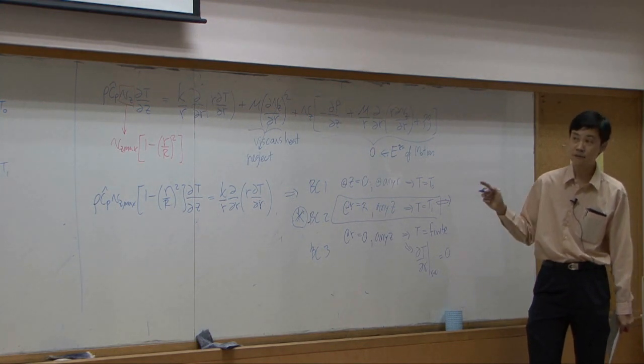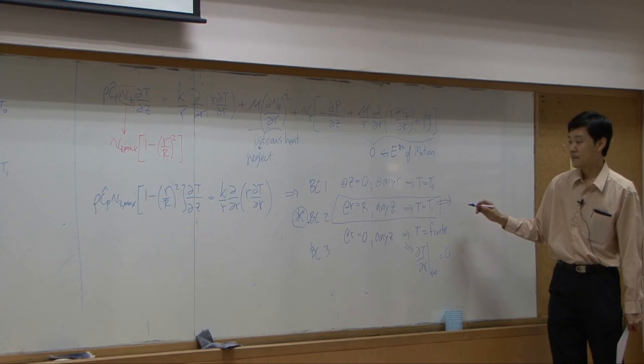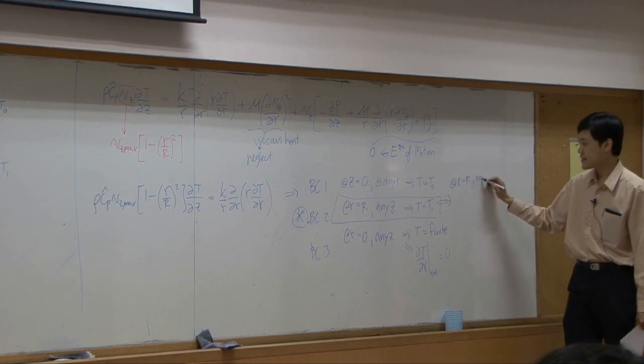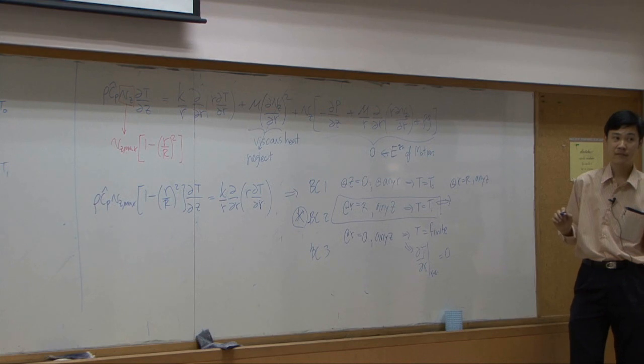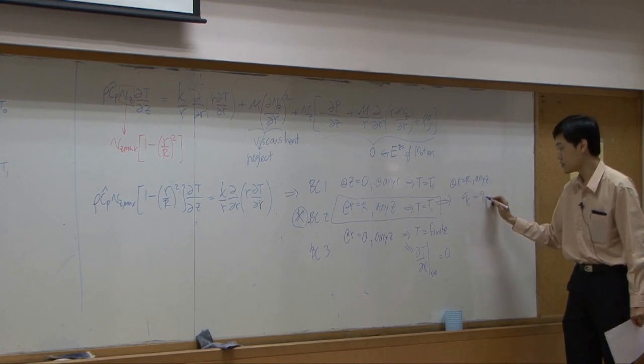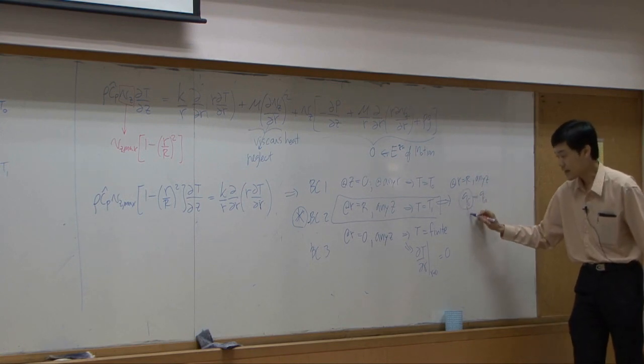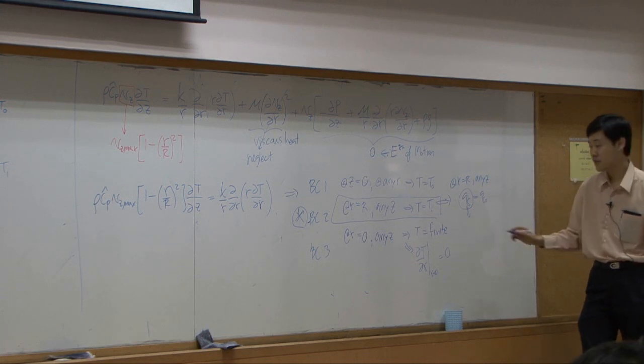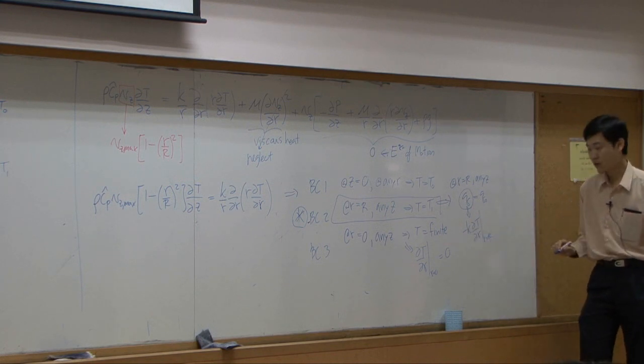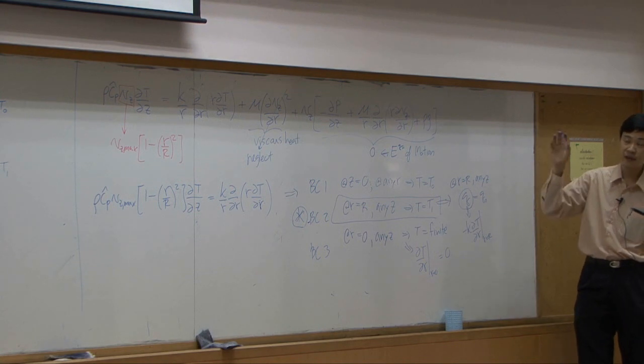Now for constant heat flux, at R equal to capital R, any Z, you know flux. That means Q is supposed to be Q0 at the wall. Of course, Q here comes from conduction in R direction. That means minus K dT by dR at R equal to capital R equal to Q0. That's how we put the boundary condition for the case of constant heat flux.